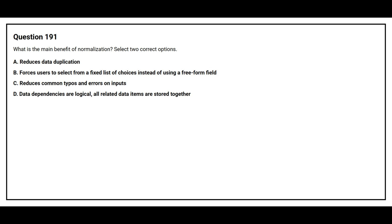Question number 191. What is the main benefit of normalization? Select two correct options. Option A: Reduces data duplication. Option B: Forces users to select from a fixed list of choices instead of using a free form field. Option C: Reduces common typos and errors on input. Option D: Data dependencies are logical. All related data items are stored together.